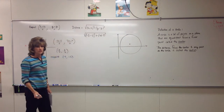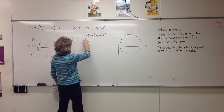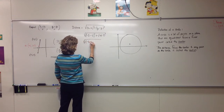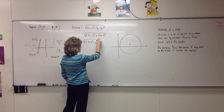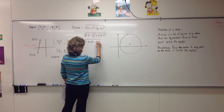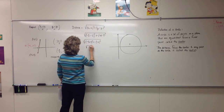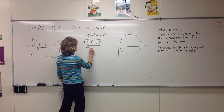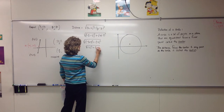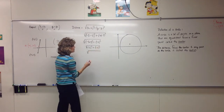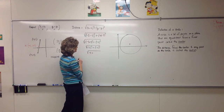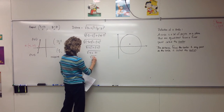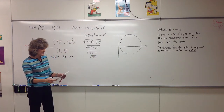On the distance formula, you subtract the x's and y's. That gives us the square root of negative five minus negative three — which makes it plus three — squared, and negative four minus seven is negative eleven squared. So the square root of negative five plus three, that's negative two squared, plus negative eleven squared. That's the square root of four plus 121, or the square root of 125. That's the exact length of that segment.